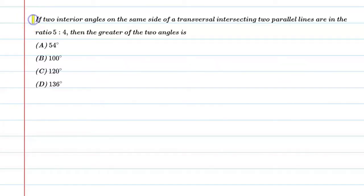Hello students, let's solve this question: If two interior angles on the same side of a transversal intersecting two parallel lines are in the ratio 5 to 4, then the greatest of the two angles is? So basically, lines are in the ratio 5 to 4.